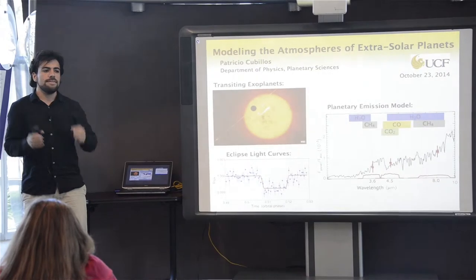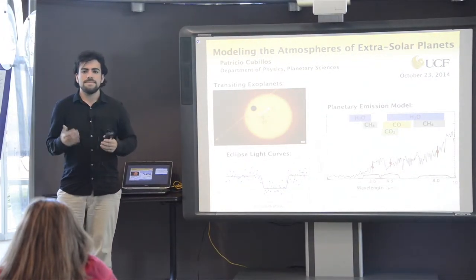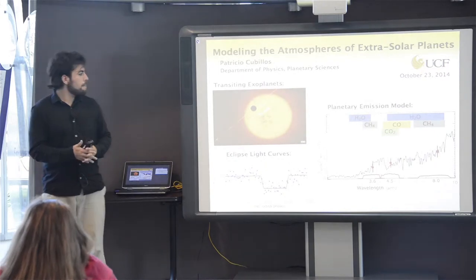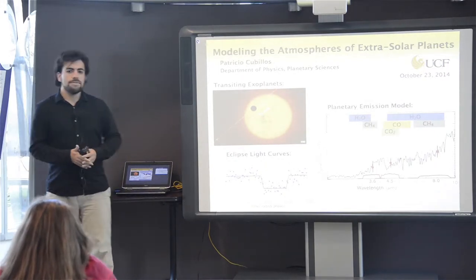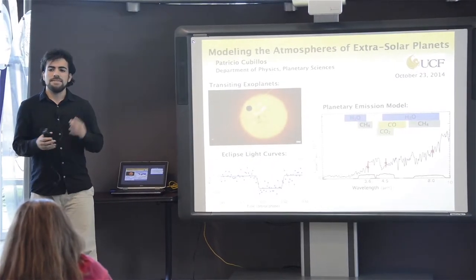Just like during a solar eclipse. These planets give us a lot of information in order to characterize them. For example, when the planet passes behind the star, what we do is measure the light from the system as a function of time.